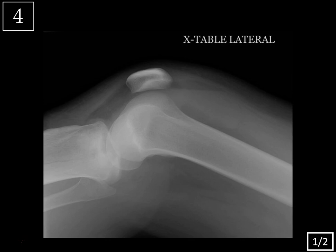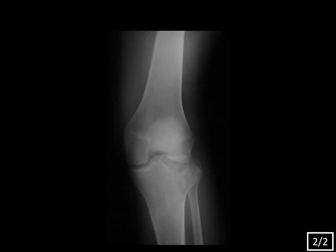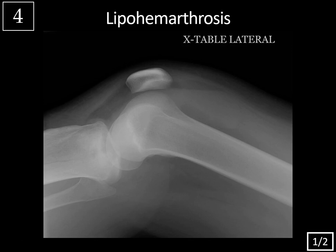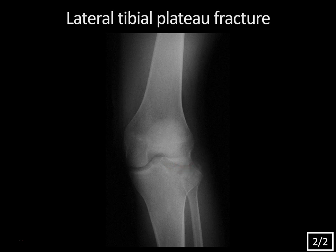Case 4. We're looking at a cross-table lateral view. Here's the patella and the femur, everything looks in normal position, but there's a fluid level indicating lipohemarthrosis. This is typically seen when you have an intra-articular fracture and fat and blood escape from the bone marrow into the joint. You'll see this most commonly about the knee, most typically associated with a tibial plateau fracture or distal femoral fracture. On the frontal view, there is a comminuted fracture of the lateral tibial plateau with some depression.